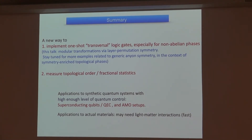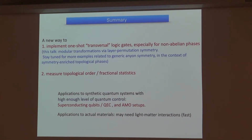So in summary, we have two major achievements. First, we can make transversal logical gates, especially for non-Abelian phases where a no-go theorem previously said they didn't exist—now there's a zoo of them. Second, we know how to measure topological order in a synthetic quantum system, which is of interest to JQI. Especially in AMO setups, which is already done by Markus Greiner to measure entanglement entropy, you can have the same kind of setup. If you have a topological phase, you can also measure the braiding statistics.